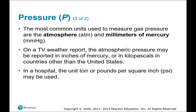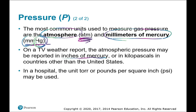The most common units used to measure gas pressure are the atmosphere, abbreviated ATM, and millimeters of mercury, shorthand as mmHg. On a TV weather report, atmospheric pressure may be reported in inches of mercury or in kilopascals in countries other than the United States. In a hospital, the unit torr or pounds per square inch (PSI) may be used. There are lots of different units to express pressure, just like there are for length.